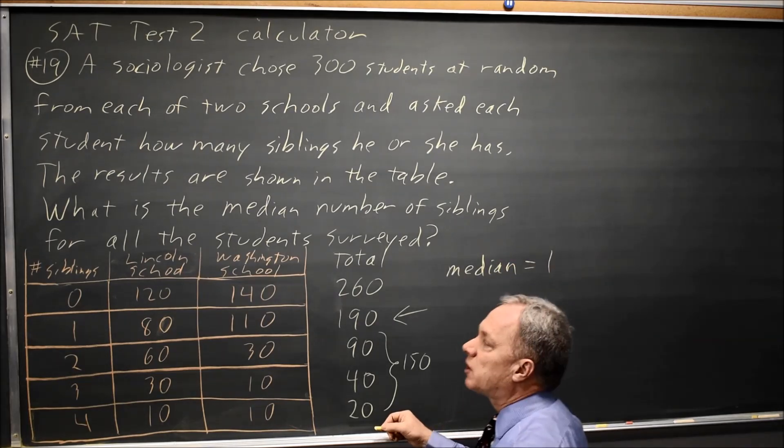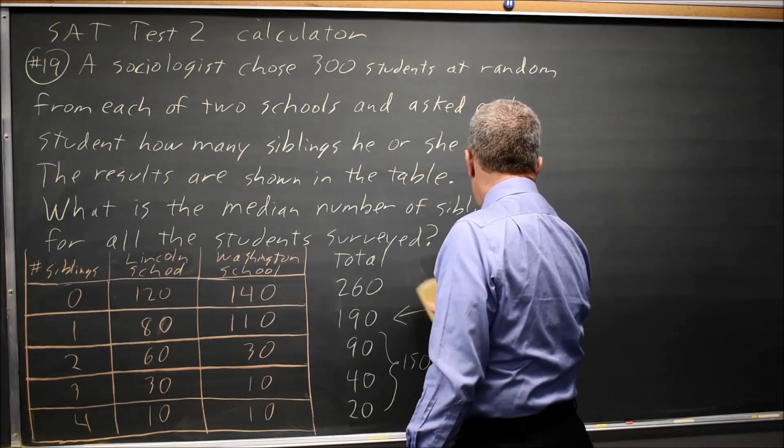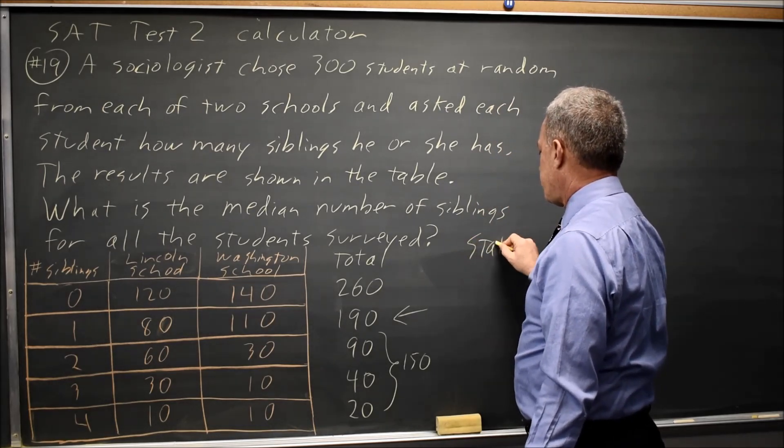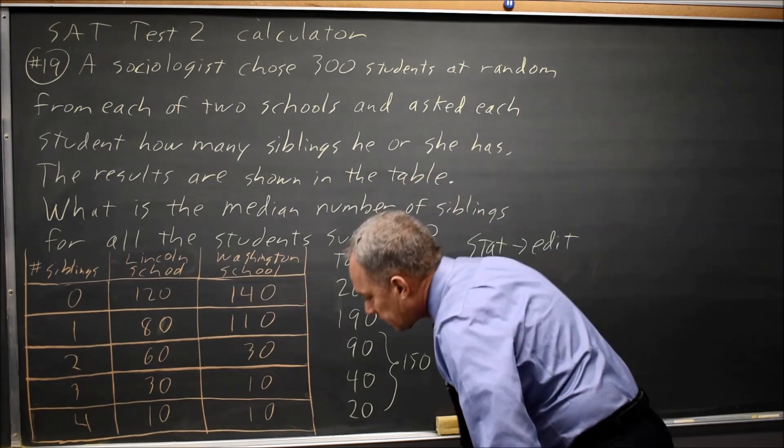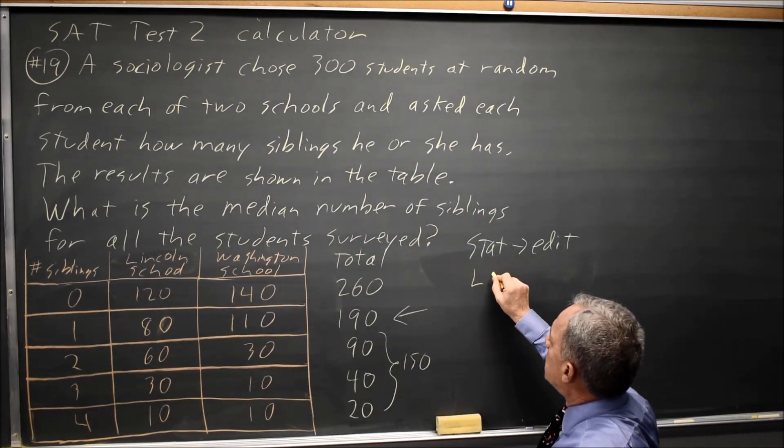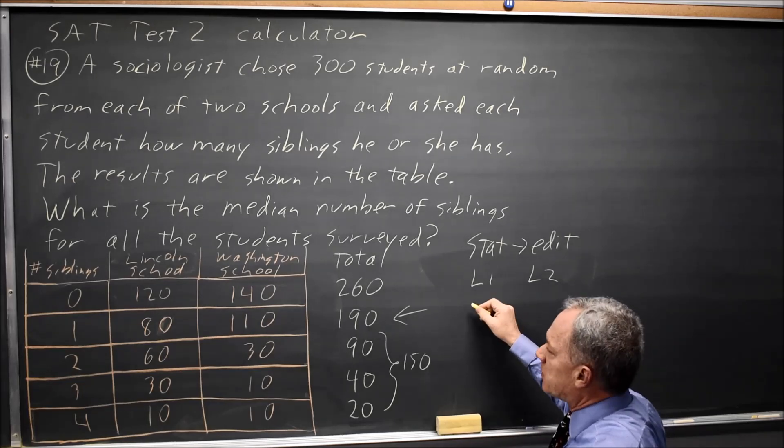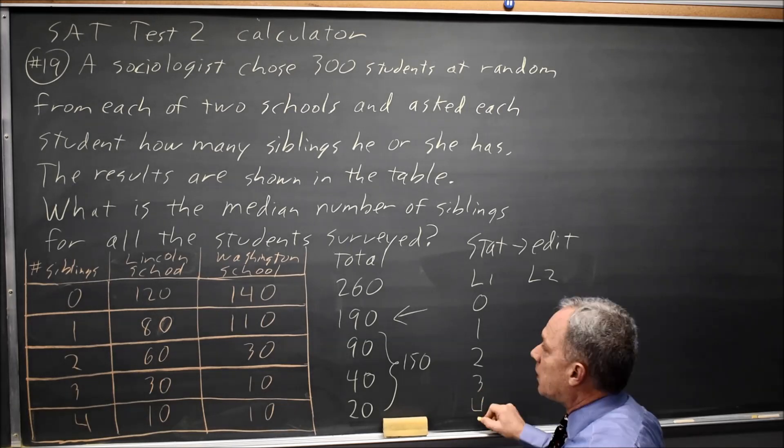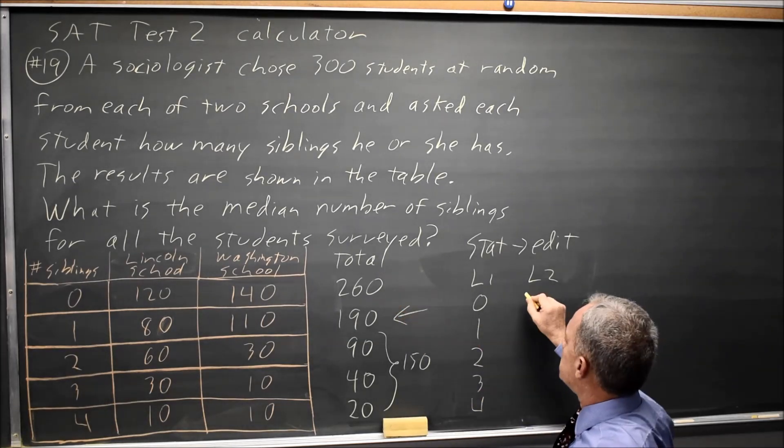If you have trouble finding the median, you can also put these into stat, edit, and then you'll come up with list 1 and list 2. For list 1, you can put the number of siblings. And for list 2, the frequency. How many total have 0 siblings?